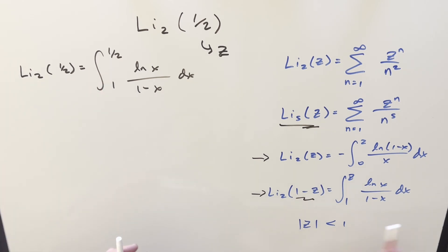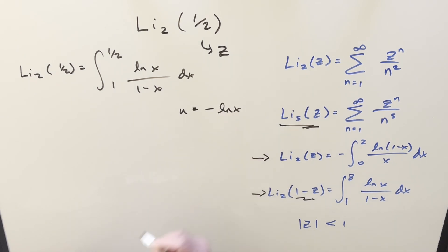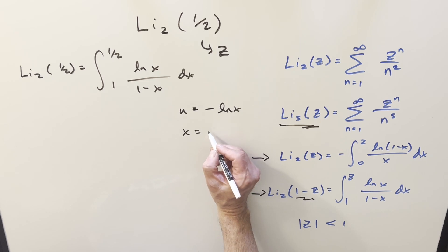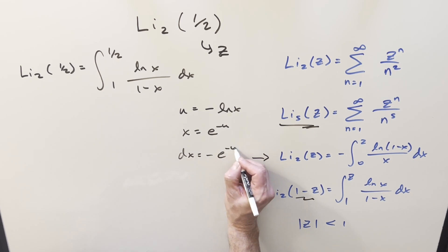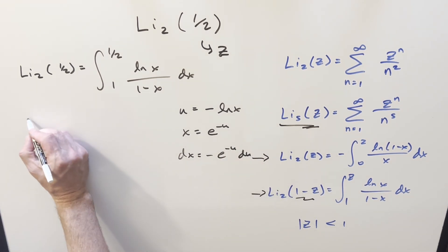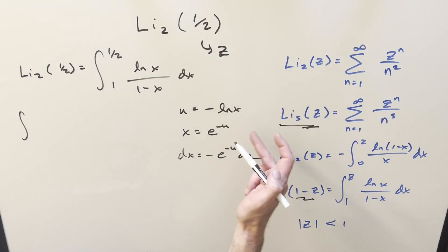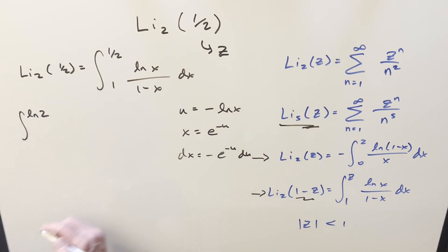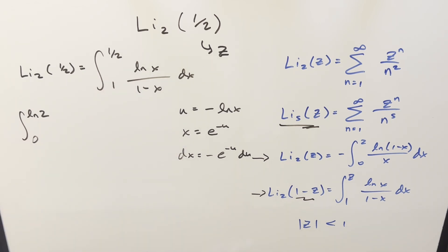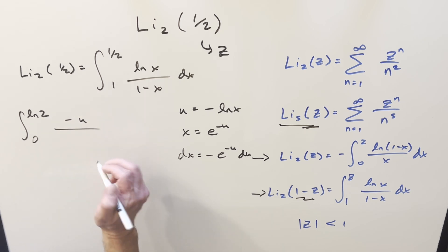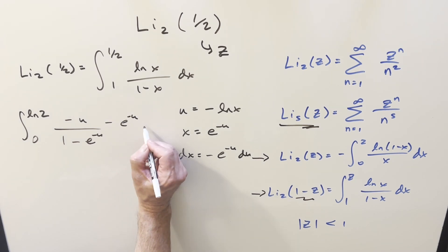For the u-substitution, let u = minus ln(x). Rearranging for x, we get x = e^(−u). Taking a derivative gives dx = −e^(−u) du. Plugging in the bounds: at x = 1/2, we get u = −ln(1/2) = ln(2), so the upper bound becomes ln 2. At x = 1, ln(1) = 0, so the lower bound is zero. Then ln(x) becomes −u, and (1 − x) becomes (1 − e^(−u)), and we have all of this times −e^(−u) du.